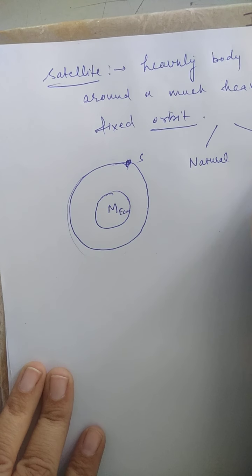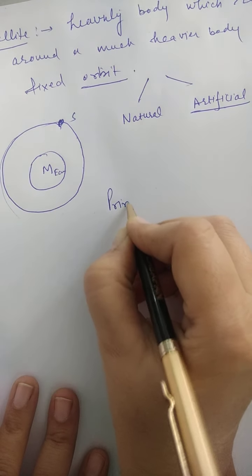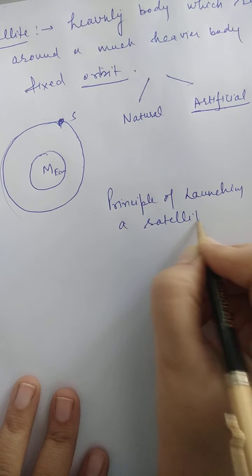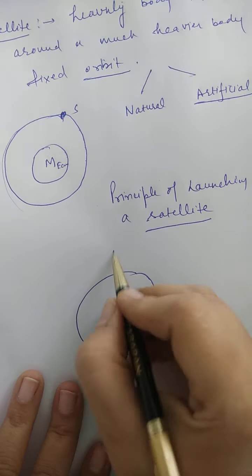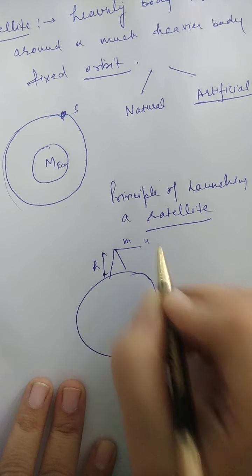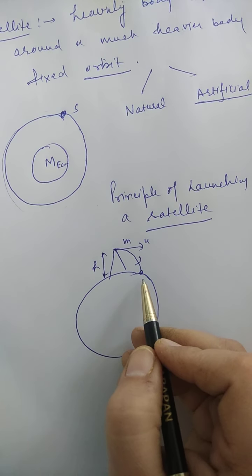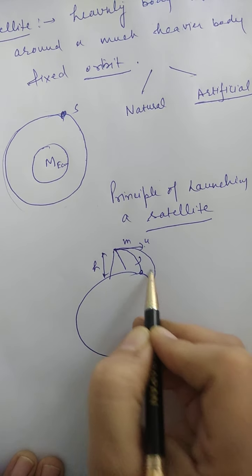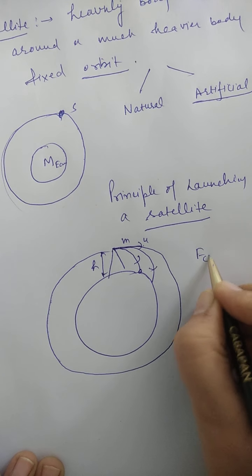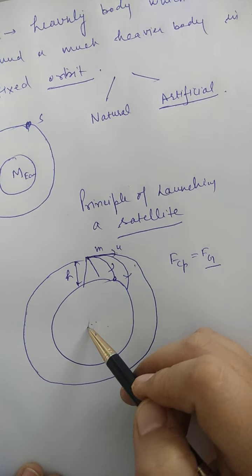Artificial satellites are man-made. We have to discuss the principle of launching a satellite. From the surface of Earth, at a high platform at height h, a mass m is projected with some initial velocity u. If given some initial velocity, it comes back to the surface due to gravitational force. When you increase the velocity, it moves away, and for a particular velocity it starts moving in a fixed orbit. This means to move in a fixed orbit, centripetal force is required, and this centripetal force is provided by the gravitational force of attraction between the satellite and the planet.